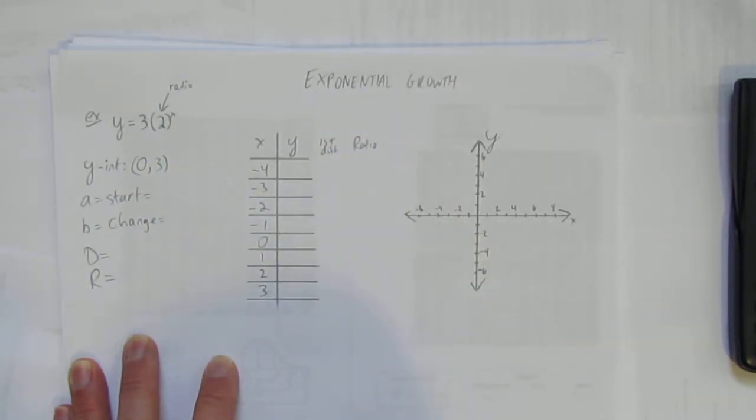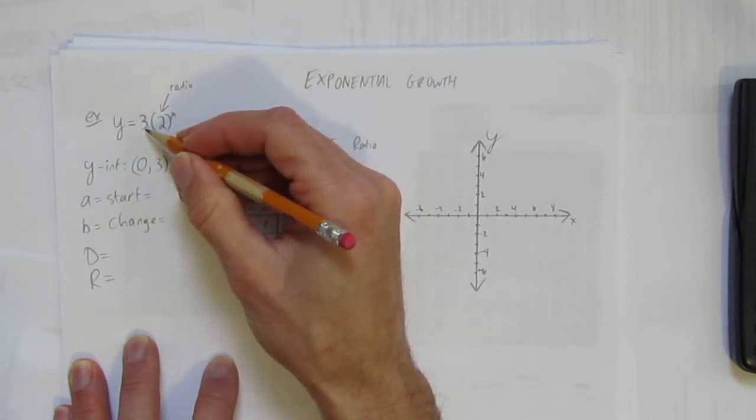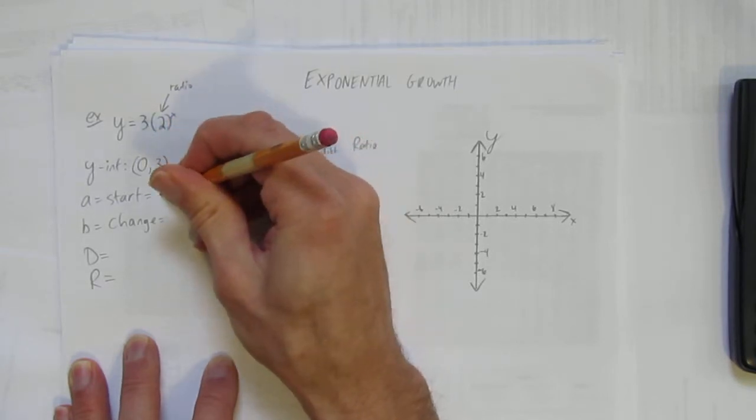The start value—that's the a-value, that's the y-intercept, it's always this number. The start value is the y-intercept, is this a-value, which is 3.